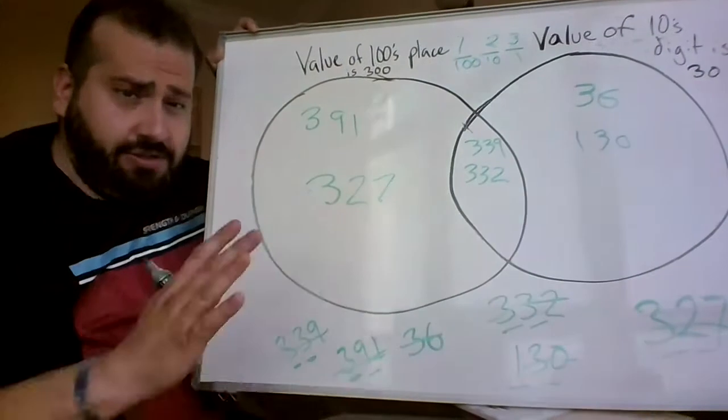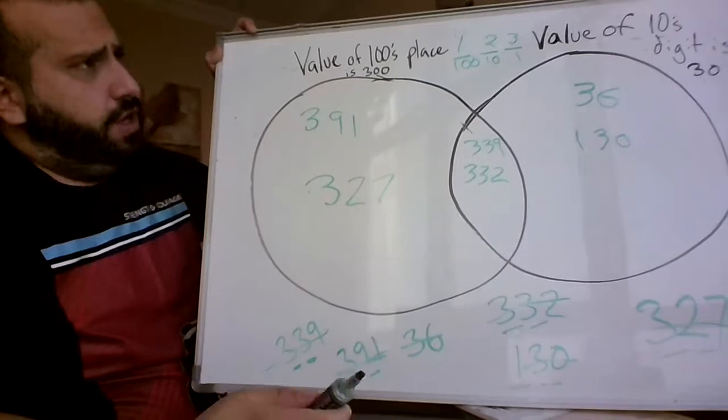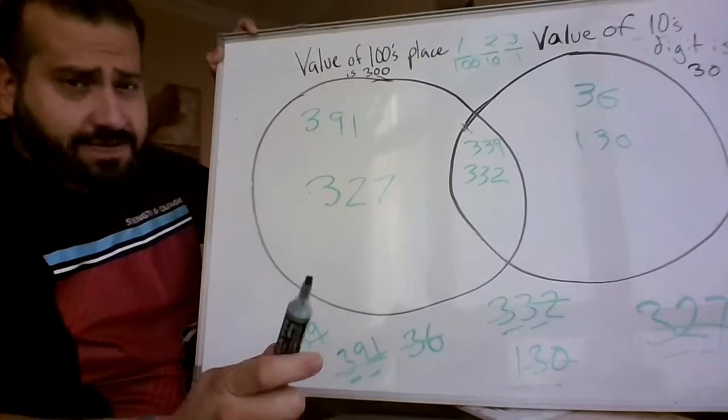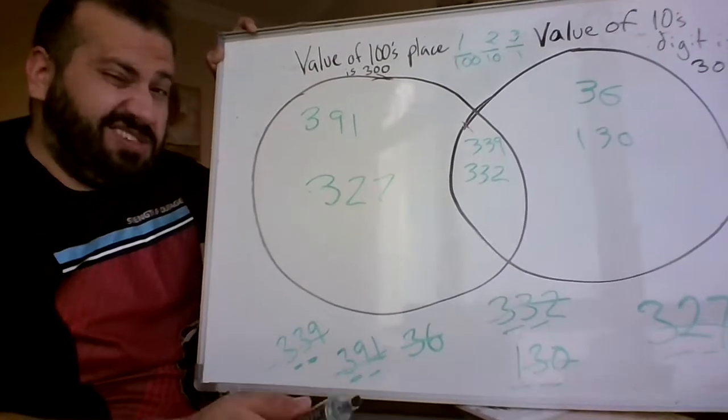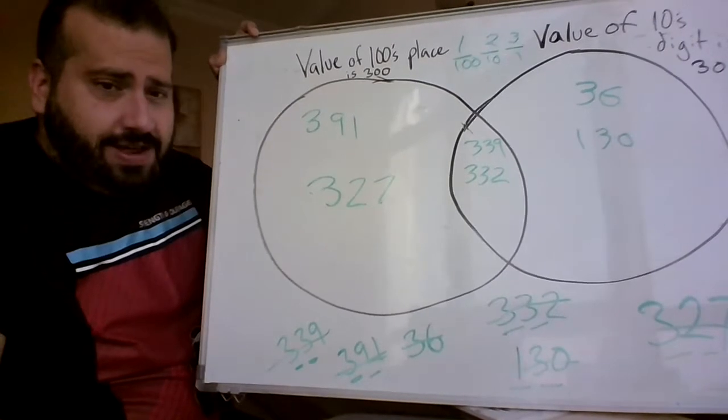I hope that clears it up a little bit for you guys. Try to do the Venn diagrams I posted over on Seesaw. I think you can get it from now. Let me know if you guys have any more questions.